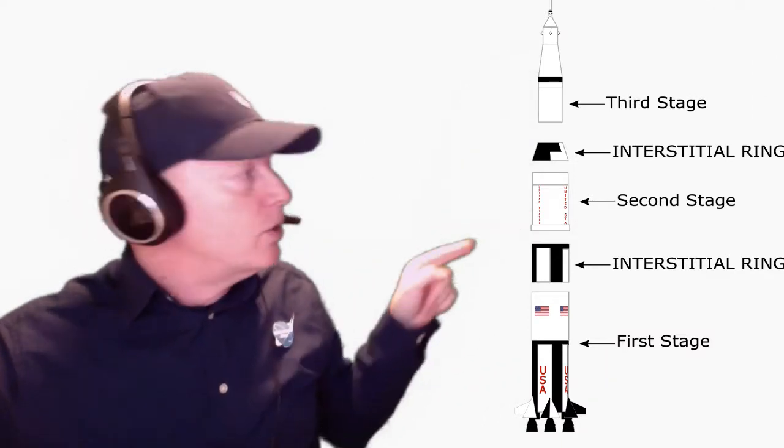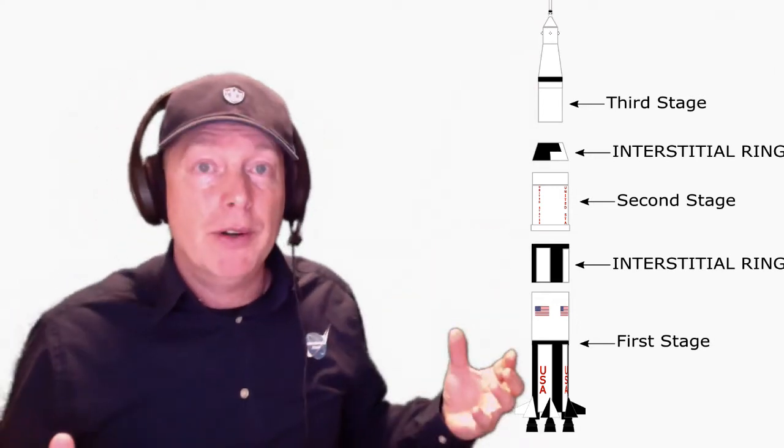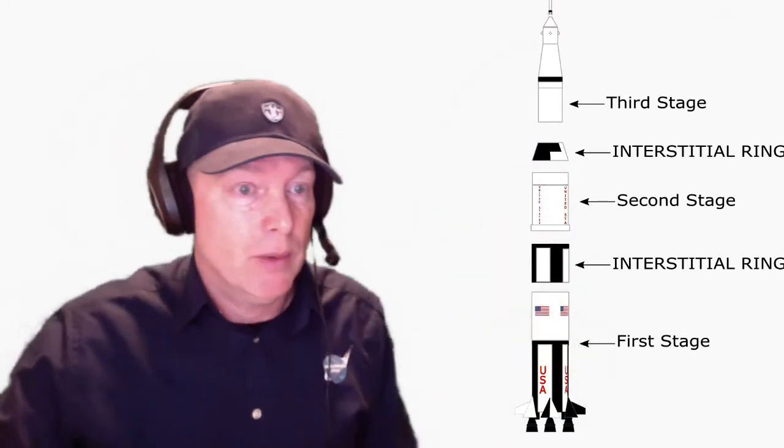Okay, so these two stages here are just used to get away from the earth and get into orbit around the earth so we can go to the moon. Let me show you the next one.